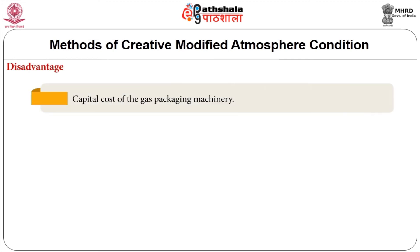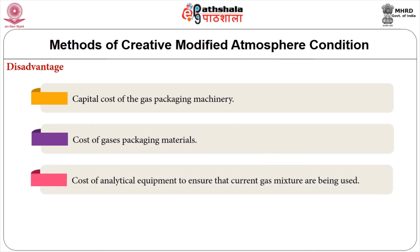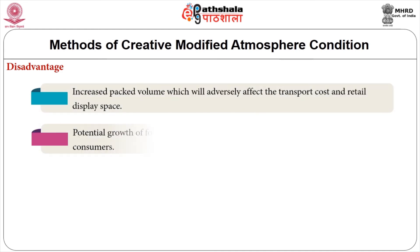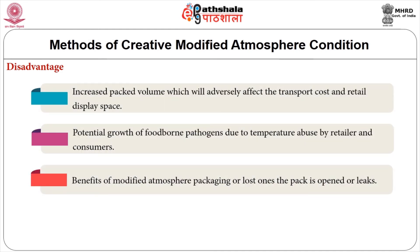Disadvantages of modified atmospheric packaging include: capital cost of gas packaging machinery; cost of gases and packaging materials; cost of analytical equipment to ensure correct gas mixtures are being used; cost of quality assurance systems to prevent distribution of leaking packs; increased pack volume which adversely affects transport cost and retail display space; potential growth of foodborne pathogens due to temperature abuse by retailers and consumers; and that the benefits of MAP are lost once the pack is opened or leaks.